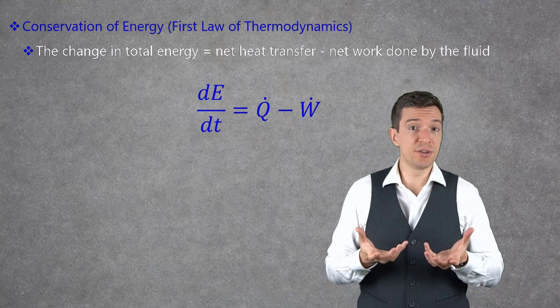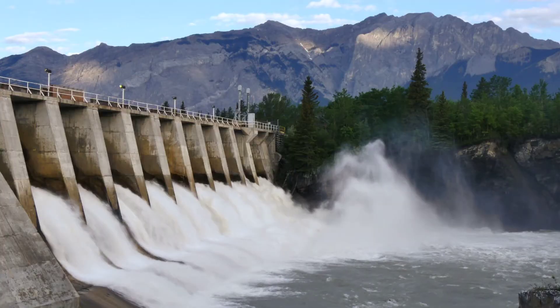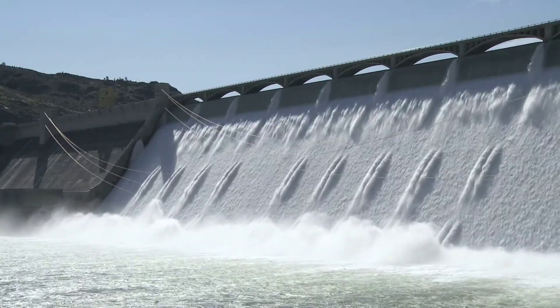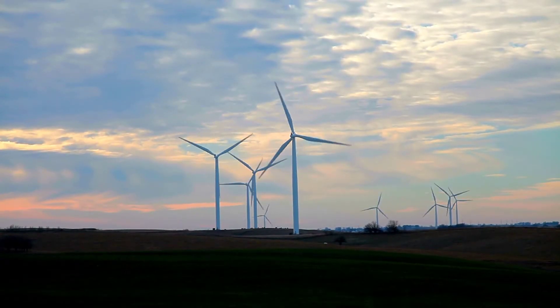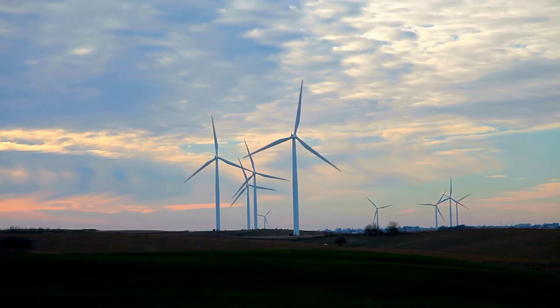The fluid energy can be used to generate work that produces electricity. For example, hydropower plants use the water energy to generate electricity. Another example are wind farms that convert the wind energy into electricity using wind turbines.